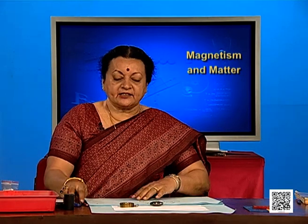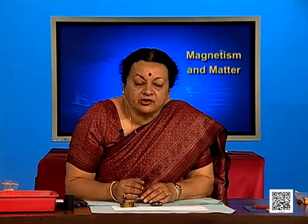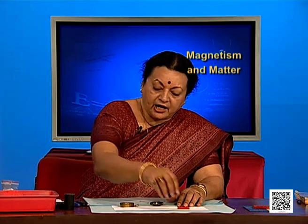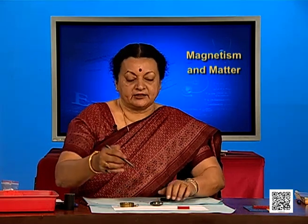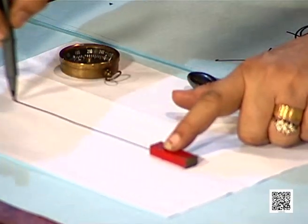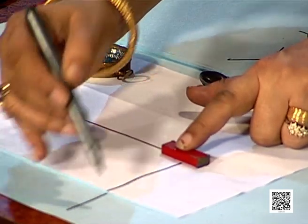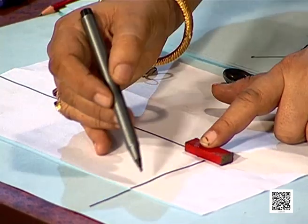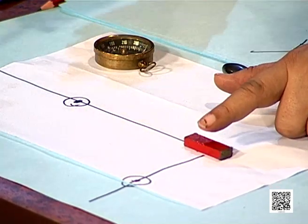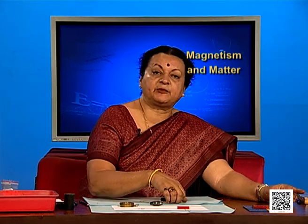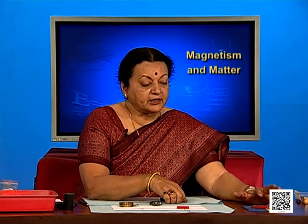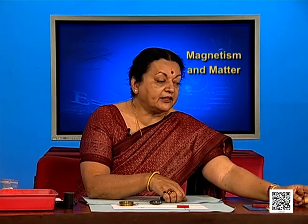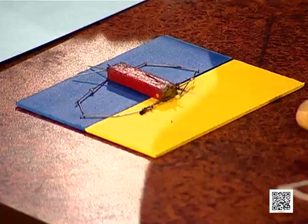We can take this idea and use it to calculate the magnetic field due to a bar magnet along two lines — one along its axis and one perpendicular to it. To do that, I have here an experiment which shows the magnetic field lines produced by a magnet and the field lines produced by a solenoid.